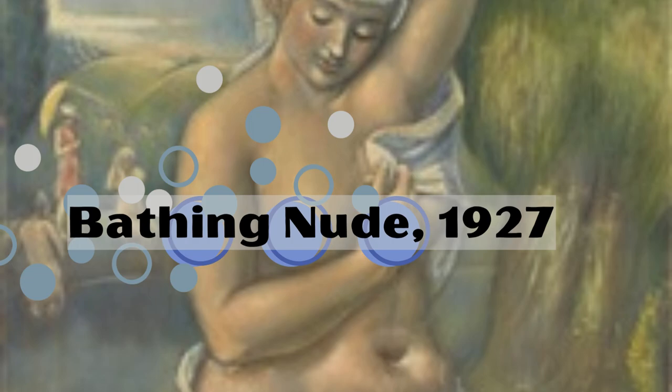Over the course of his career, Miller's style evolved. While rooted in realism, he incorporated elements of modernism into his work. This fusion is evident in his exploration of form, light, and color, demonstrating an openness to progressive artistic trends and an evolution of style.